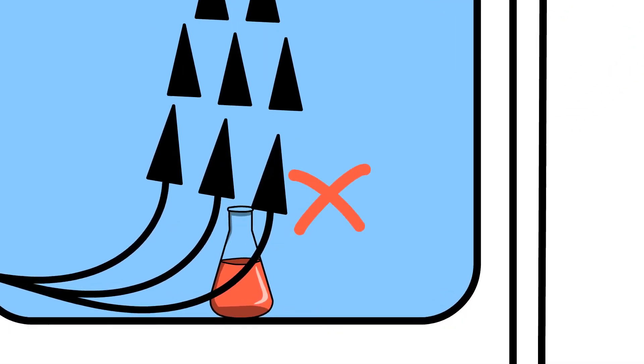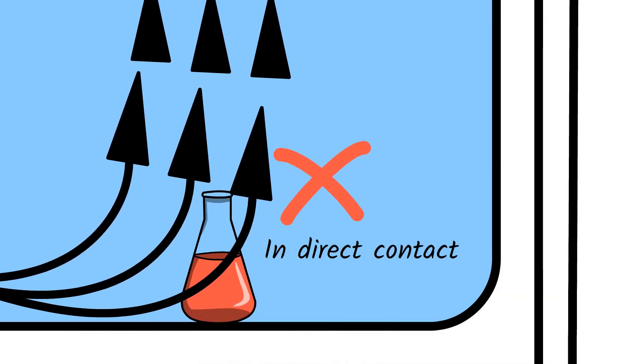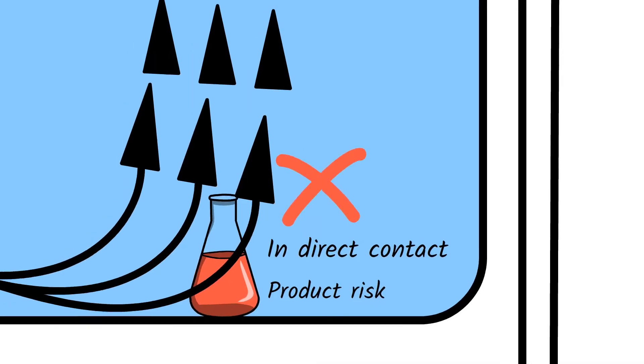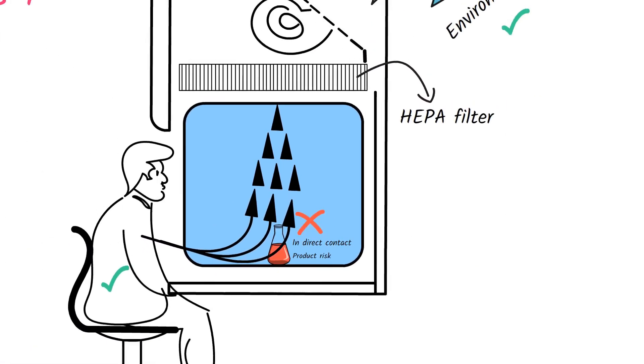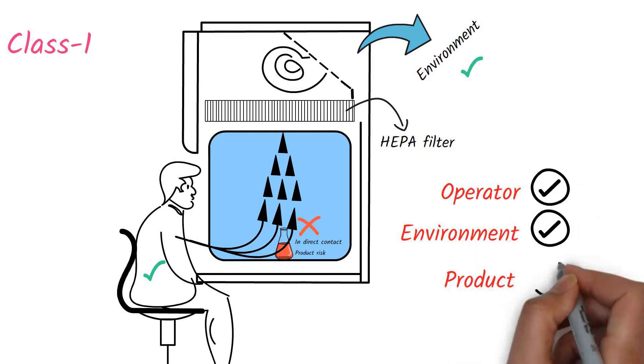In this case, the surrounding air is coming in direct contact with the product on the work surface and therefore increasing the risk of product contamination. In this way, the Class 1 biosafety cabinets protect the operator and the environment, but not the product.